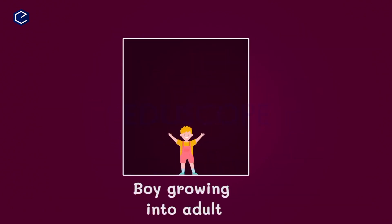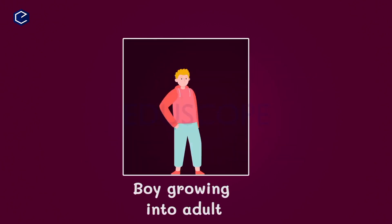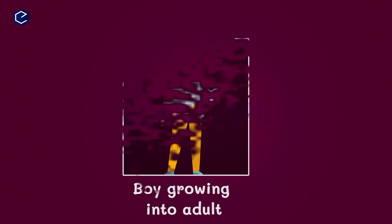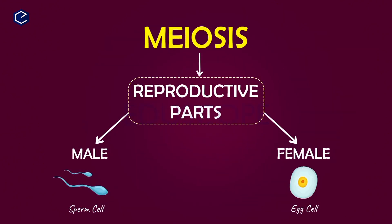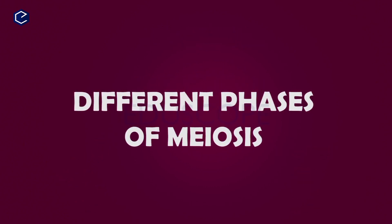Now let's look at meiosis. Mitosis occurs in normal body cells for growth and development. Meiosis occurs in reproductive cells. In male reproductive parts, meiosis produces sperm cells. In female reproductive parts, meiosis produces egg cells. Meiosis has different stages.